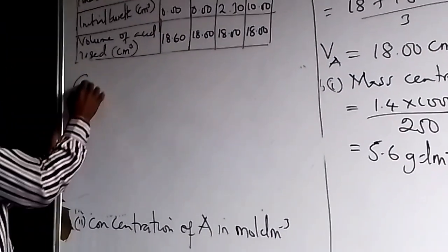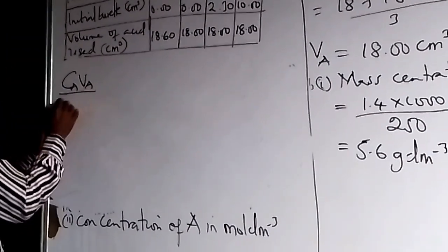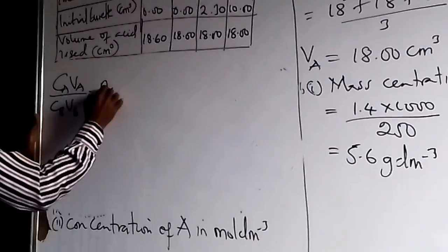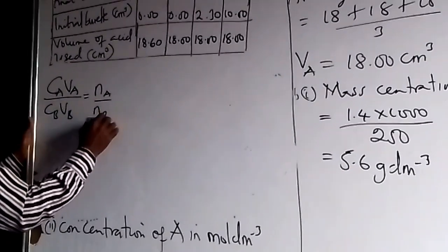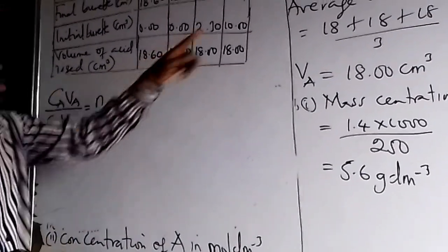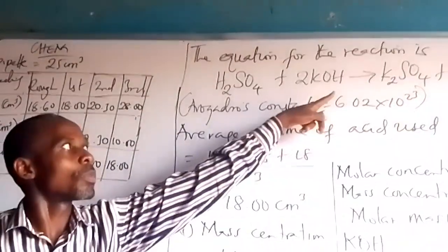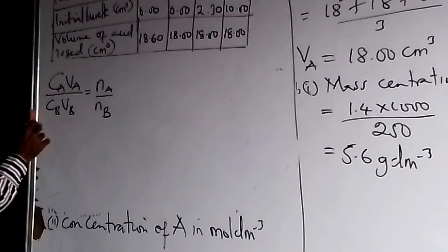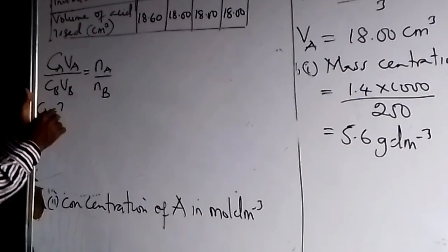So concentration of the acid, we use this formula. Concentration of acid times volume of acid over concentration of base times the volume of base is equal to number of moles of acid over number of moles of the base. We are going to use this equation for the number of moles.